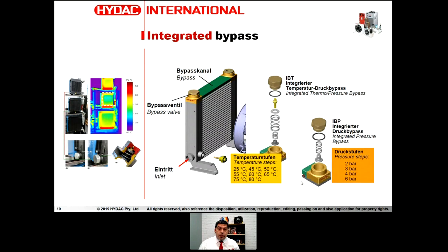A quick field tip: if you're on site and don't know whether you have an IBP or IBT installed, look at the size of the hexagonal plug. If it's a tall/high one, it's an IBT; if it's a thin one, it's an IBP. That's a quick check for what's installed in your machine.